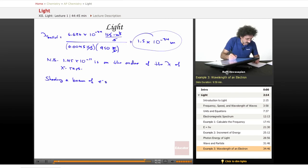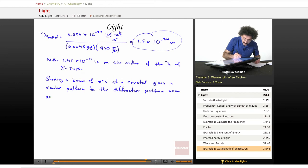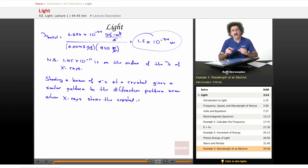So now shooting a beam of electrons at a crystal gives a similar pattern to the diffraction pattern seen when x-rays strike the crystal.